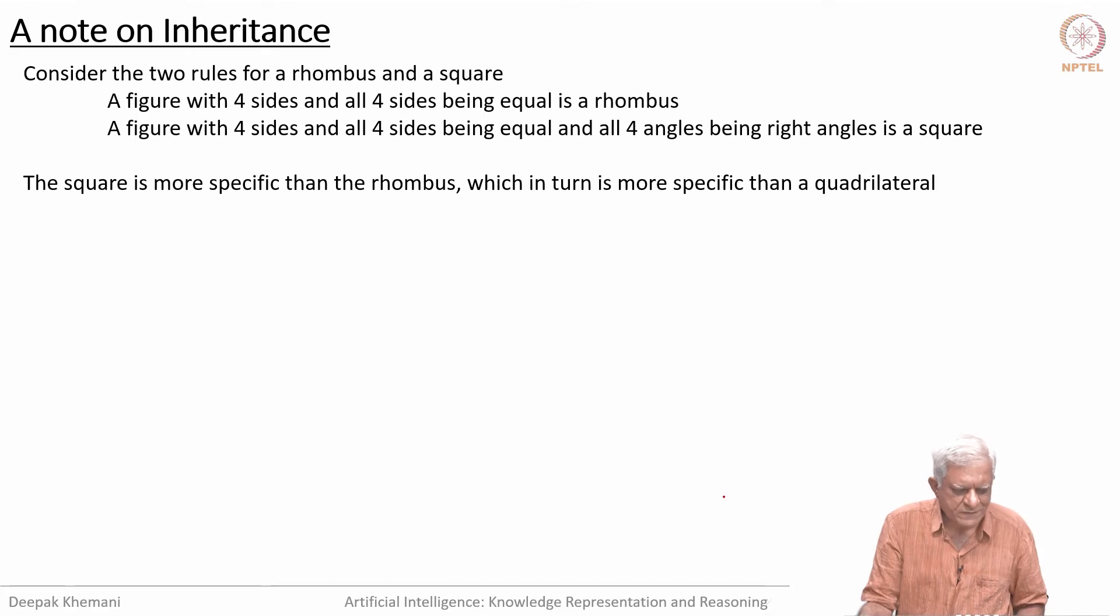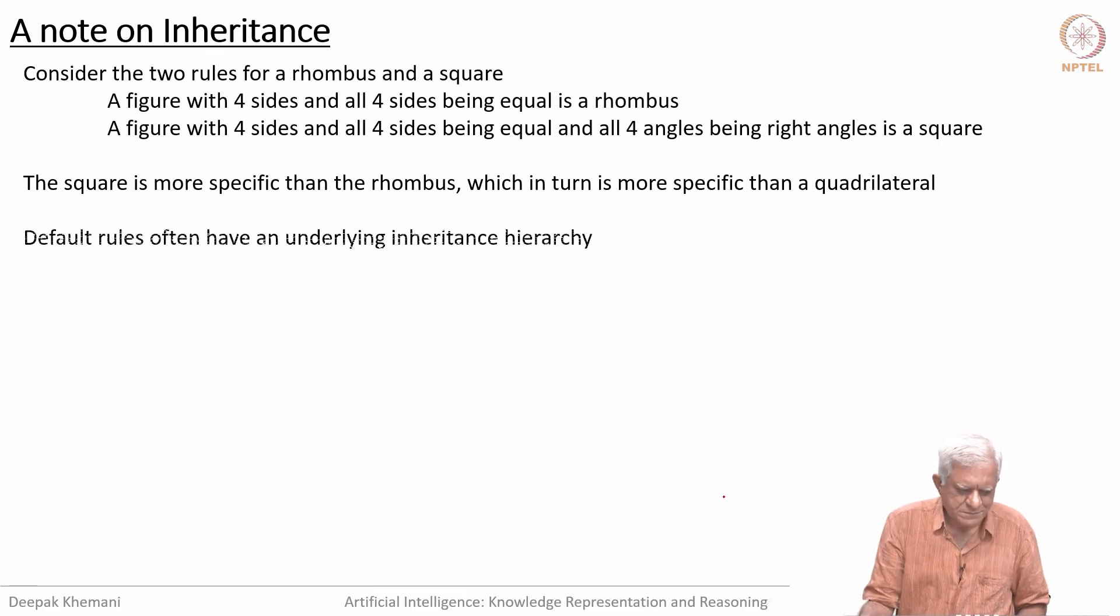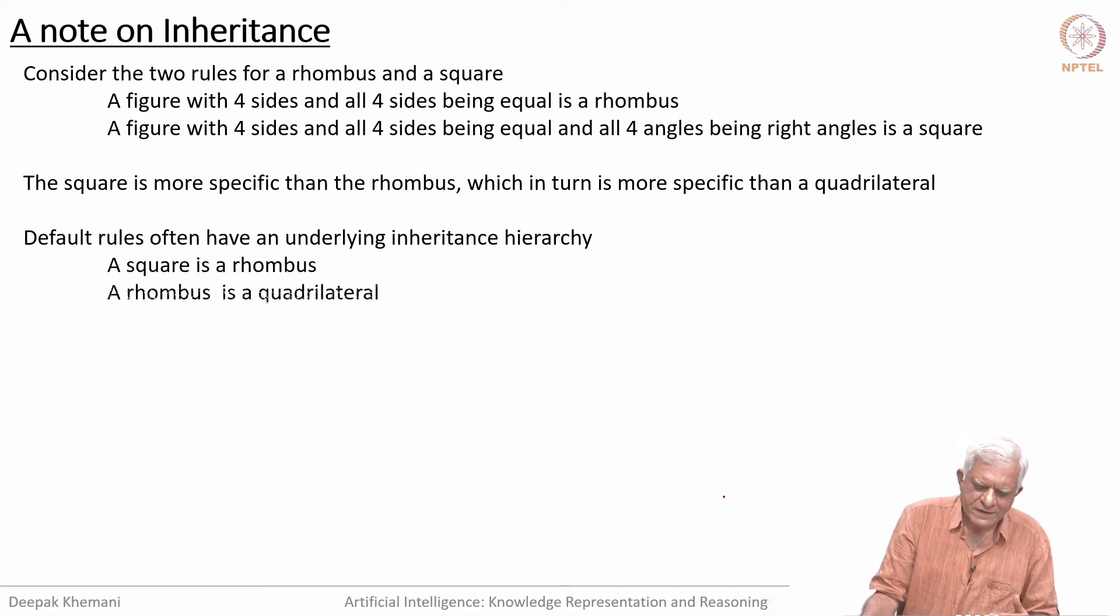We will be looking at a little bit of that. The square is more specific than the rhombus, which in turn is more specific than a quadrilateral. Default rules have an underlying inheritance hierarchy. A penguin is a bird, for example. Whatever properties you will ascribe to a bird can be inherited by the penguin. Likewise, whatever you say about a quadrilateral will also be inherited by a square.